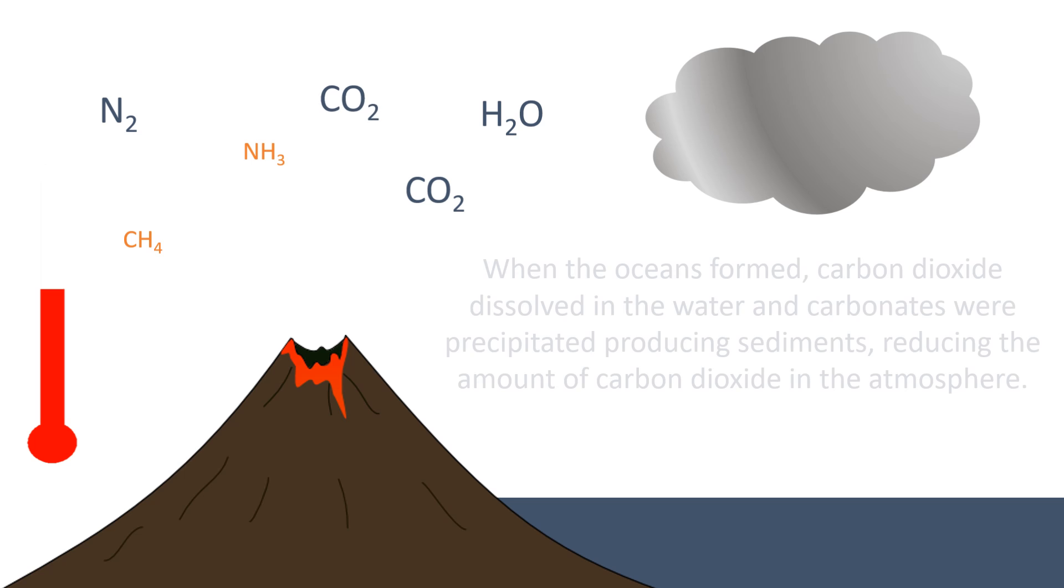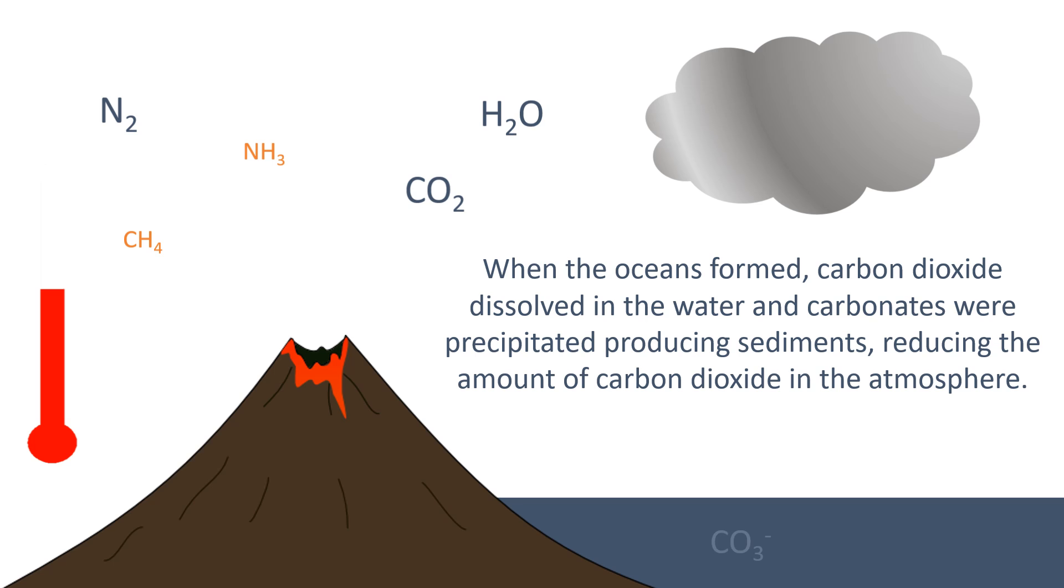As the oceans formed, carbon dioxide would dissolve in the water, producing carbonates, which were precipitated producing sediments. This would remove the amount of carbon dioxide in the atmosphere.